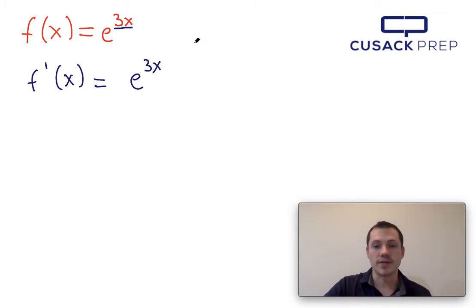The derivative of 3x is just 3, so we'd multiply this by 3 and when I do that I'm just going to go ahead and throw the 3 out in the front here.